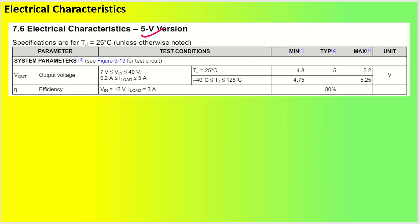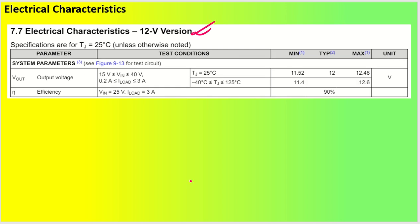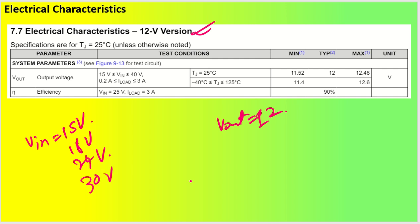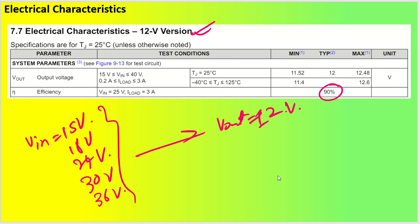For the 5V version, it requires at least 7V input — so keep around 2V of headroom — and efficiency is slightly higher. For the 12V version, your Vin can range from 15V up to 36V to get 12V out. Many applications today require 12V output, and efficiency has increased to up to 90%, showing that higher output voltage yields better efficiency.